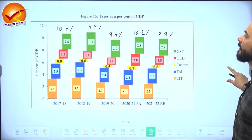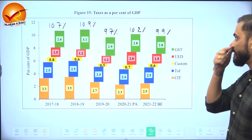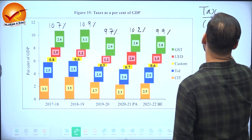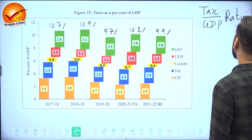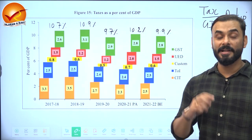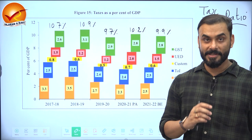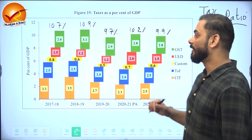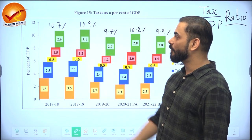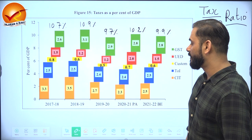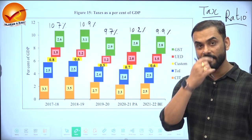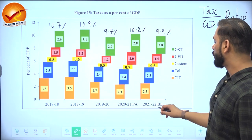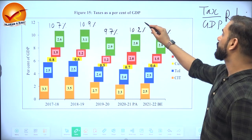Now let us look at the tax-to-GDP ratio taken from the economic survey. Whenever GDP increases, we expect tax collection to also go up, which the government uses for public welfare and infrastructure. Looking at the trend: in 2017-18 it was 10.7%, in 2018-19 it increased to 10.9%, in 2019-20 it fell to 9.7% due to the slowdown, then it improved to 10.2% in 2020-21, and in 2021-22 it was 9.9%. Clearly the tax-to-GDP ratio has come down and needs attention.